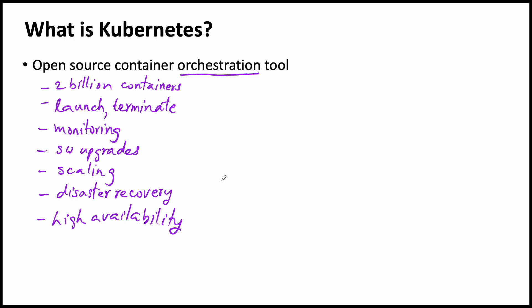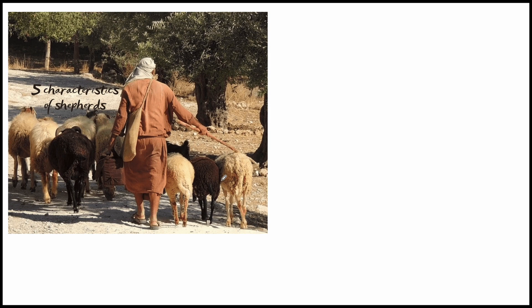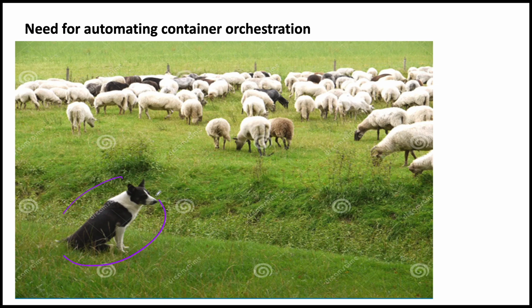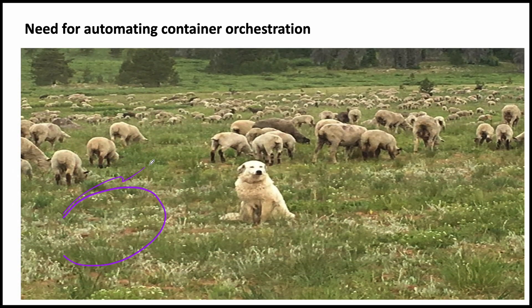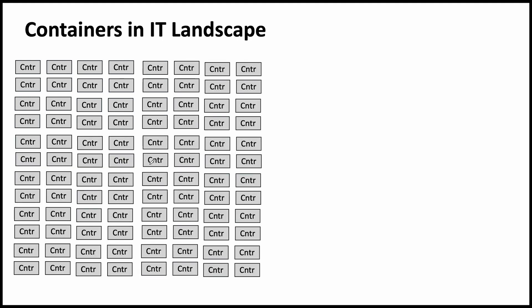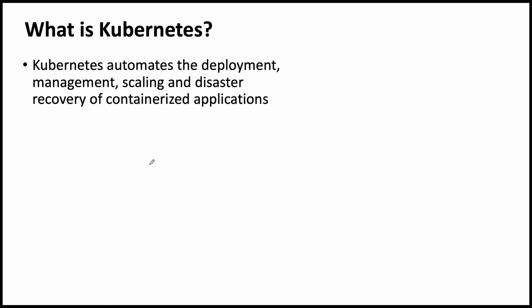That is called orchestration of your containers. If you have just two or three containers in your IT landscape, you can manually do that. It is something like if you are a shepherd and you have four or five goats or sheep, you can manage it yourself. But if you have thousands of them, you need some level of automation to manage such a big number. When your company is small maybe you have very few containers, but as you containerize most of your applications the number increases and fills your IT landscape. You are not in a position to manually orchestrate all your containers — how will you orchestrate 2 billion containers? That is where you need an automation tool which can do that task for you. And Kubernetes is the most widely used container orchestration tool.